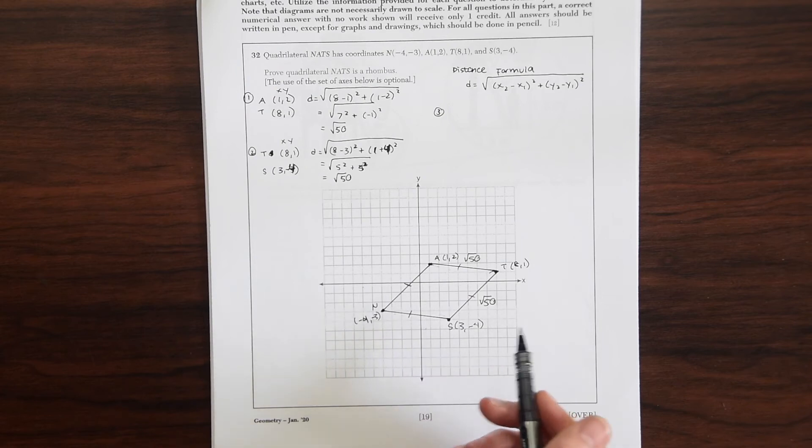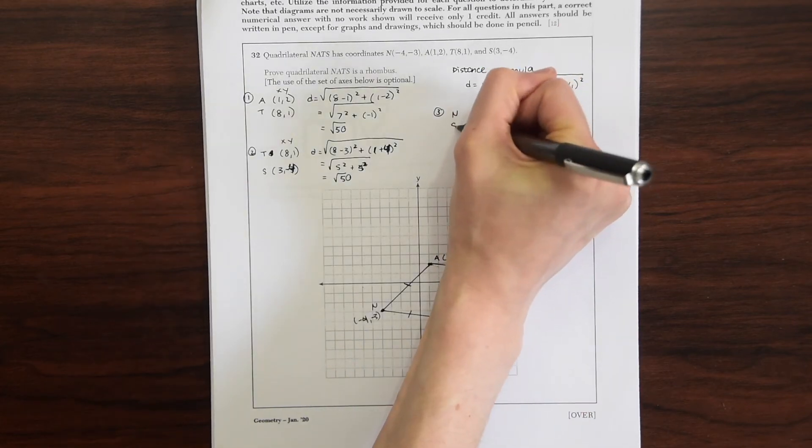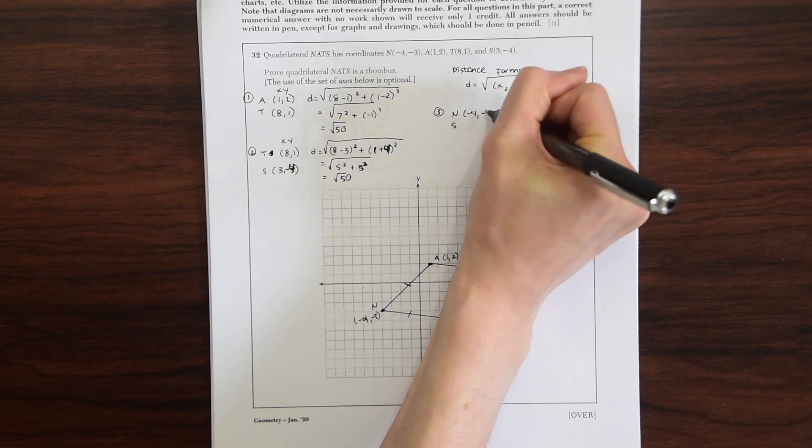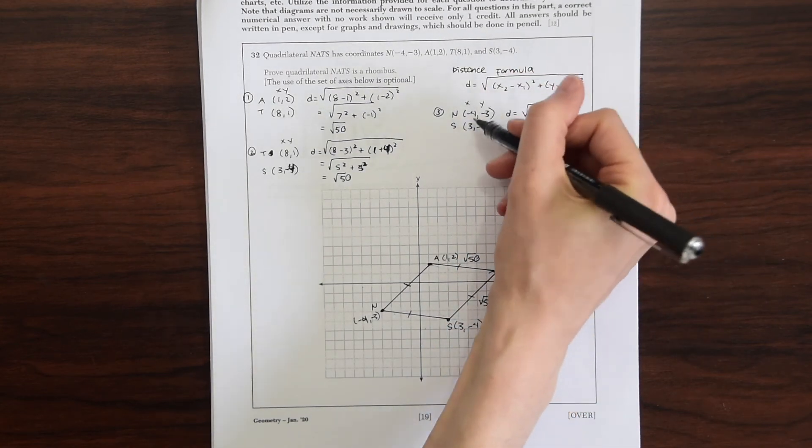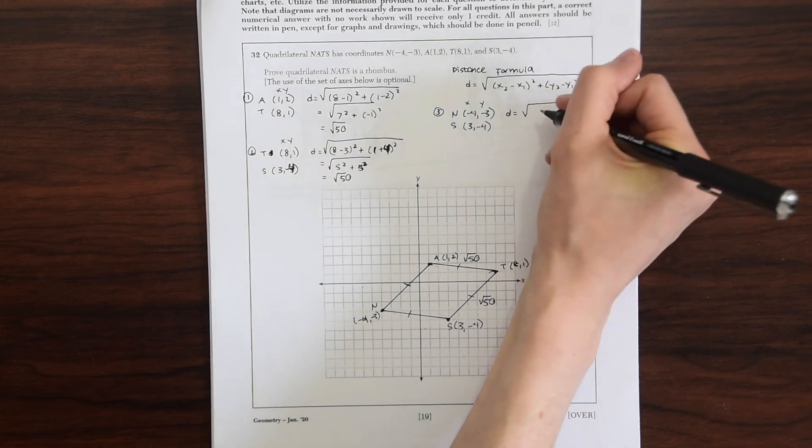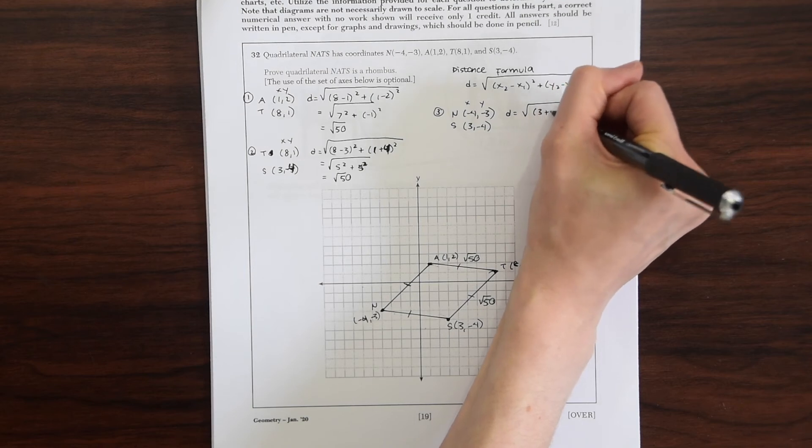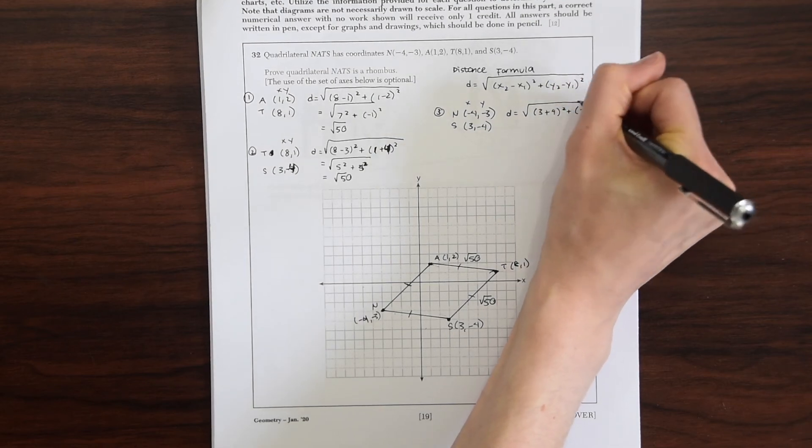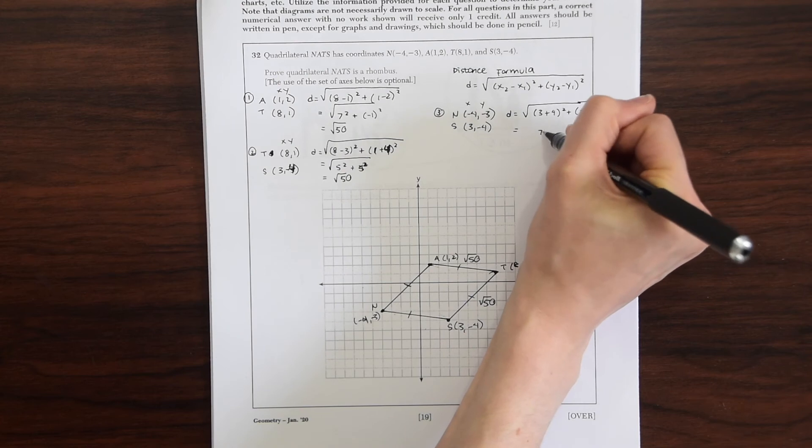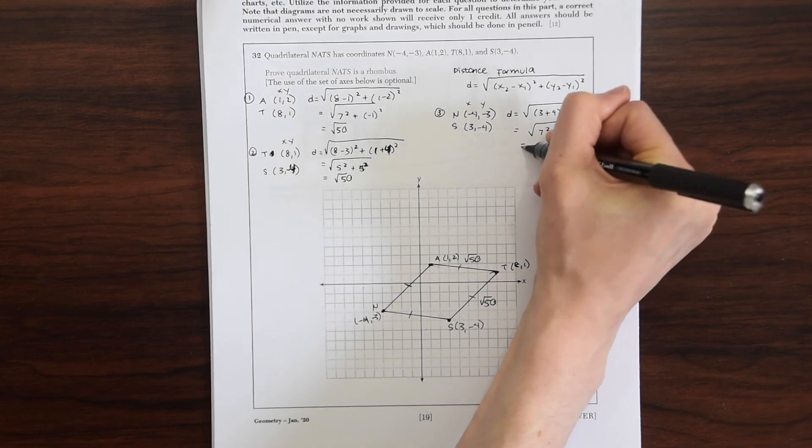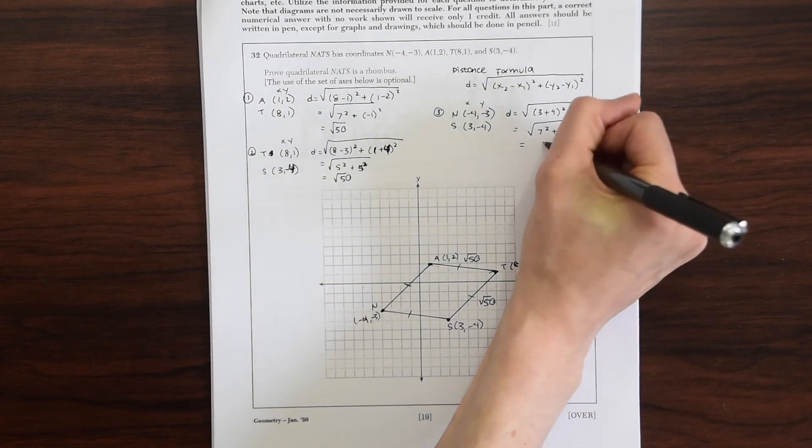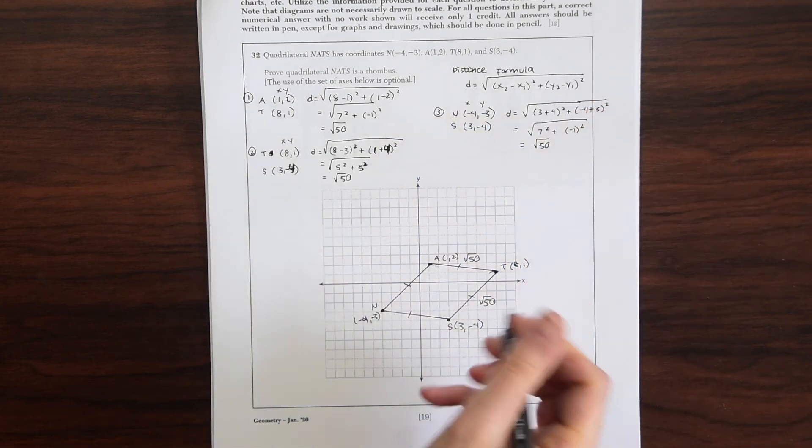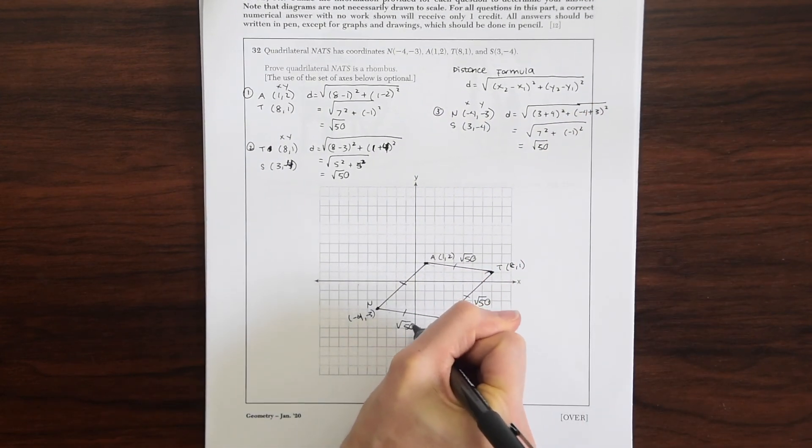Now let's go to the next side, NS. So N is (-4,-3), and S is (3,-4). Again, just doing the same thing, plugging these coordinates into this formula to see if we get √50. So notice we get 7², which is 49, plus (-1)², which is 1. So this will give us √50 again. So far this is looking good. It looks like all sides are congruent to each other.